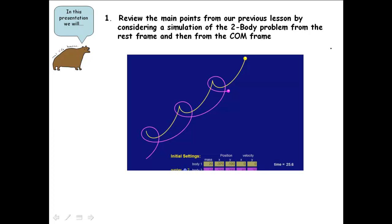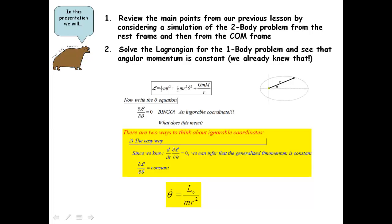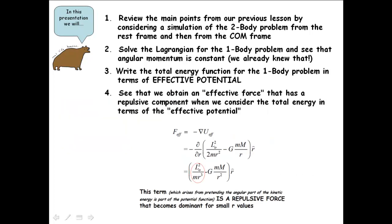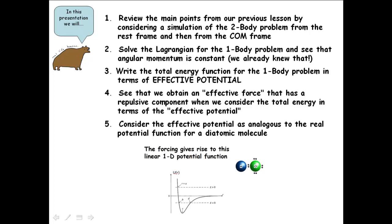What did we do this lesson? We reviewed the main points from our previous lesson by considering a simulation of the two-body problem from the rest frame and then from the center of mass frame. Then we saw the Lagrangian and arrived at the equation for θ-dot because angular momentum is constant. We wrote the total energy function for the one-body problem in terms of effective potential, and saw that the effective force from the negative gradient gives a fictitious repulsive component. Finally, we looked at the analogy between the effective potential for an orbiting satellite and the potential energy function for a diatomic molecule. See you next time.